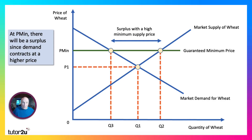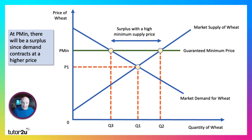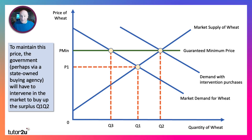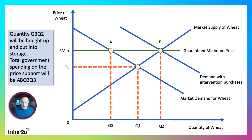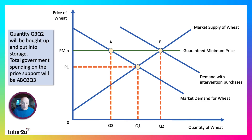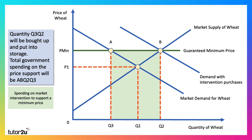At that minimum price, there could well be a surplus since demand contracts at the higher price. To maintain the price, the government might have to go into the market and buy up any surplus, perhaps using an intervention agency. The quantity Q3 minus Q2 is bought into storage, and the total government spending on that support is represented by the area A-B-Q2-Q3. Intervention purchases to support a minimum price can often be very expensive.